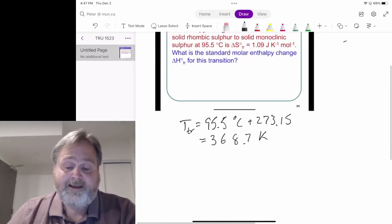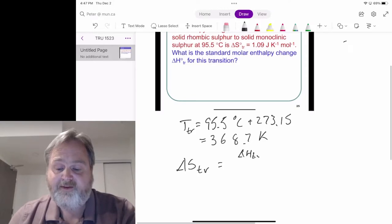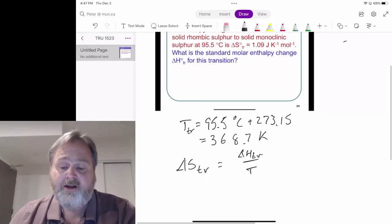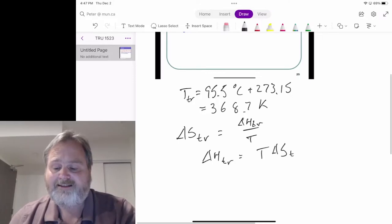We would have seen that delta S for a transition equals delta H for the transition, divided by the temperature. Which unsurprisingly means we can calculate delta H for a transition. That's going to be T delta S for the transition.